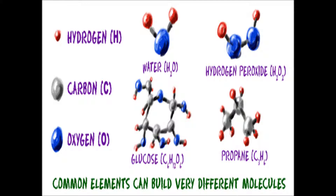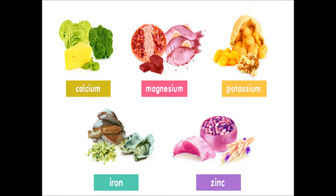All living organisms are made up of atoms of carbon, hydrogen, oxygen, and nitrogen. Other elements such as sodium, potassium, magnesium, calcium, iron, and sulfur are present in small amounts in living organisms.